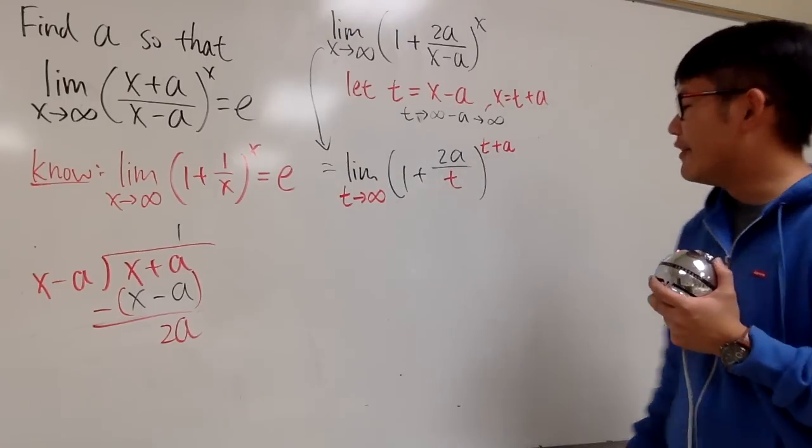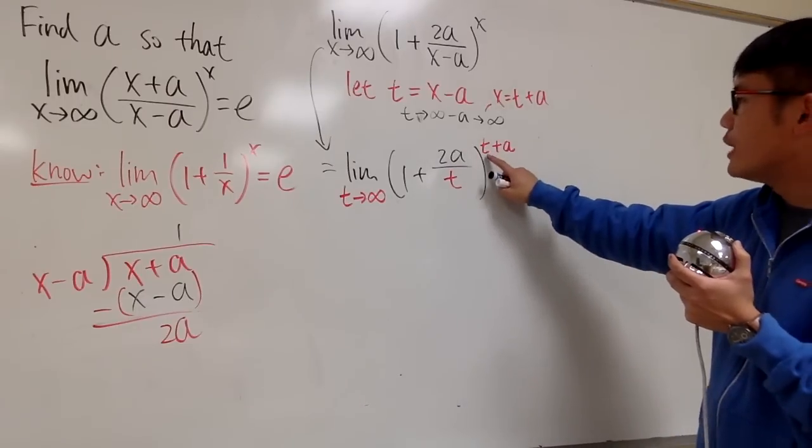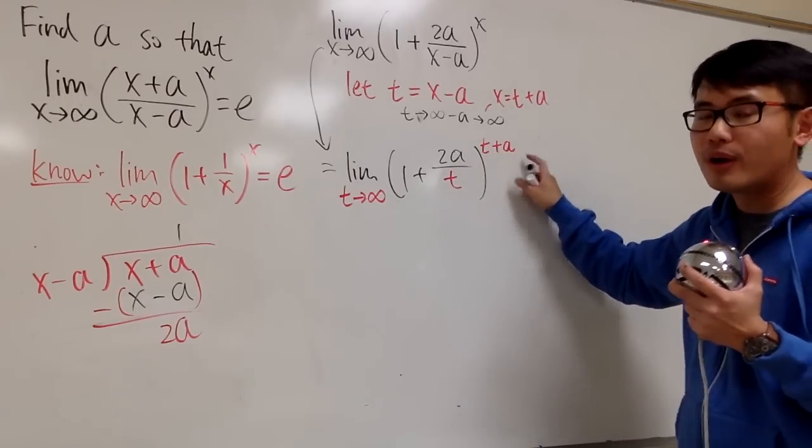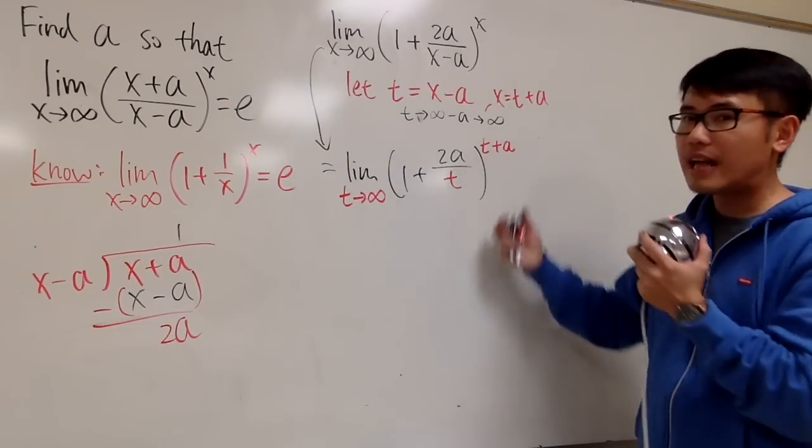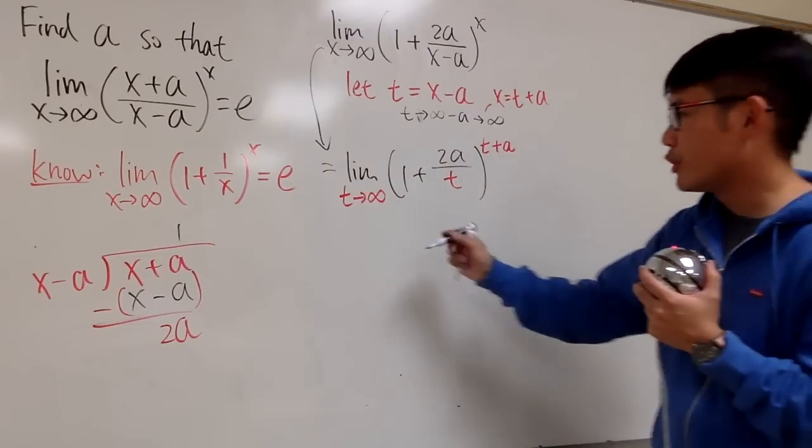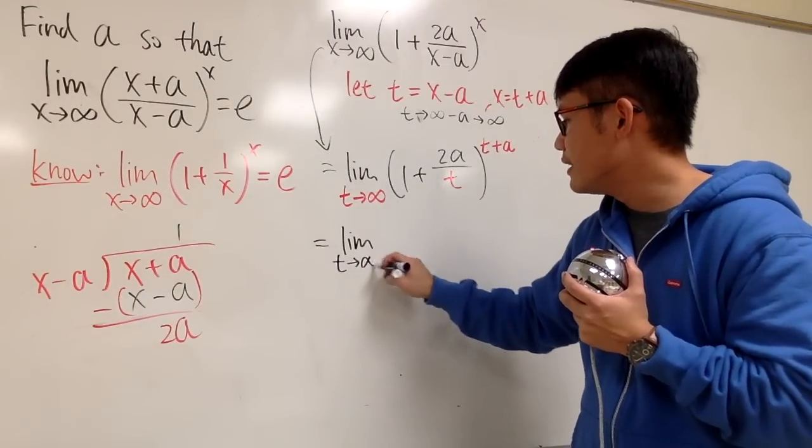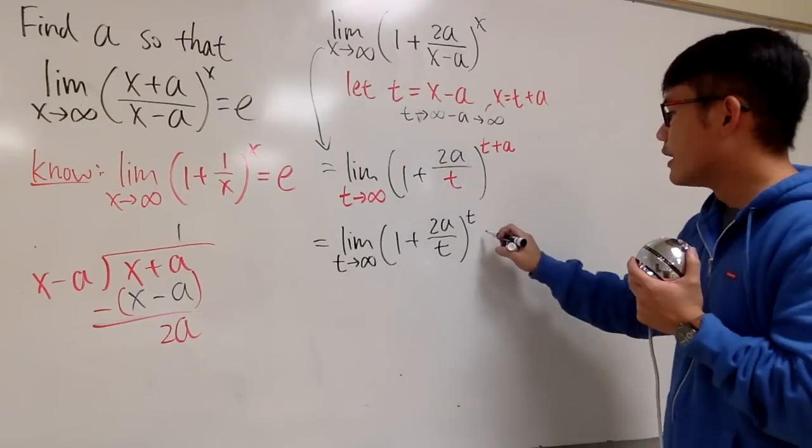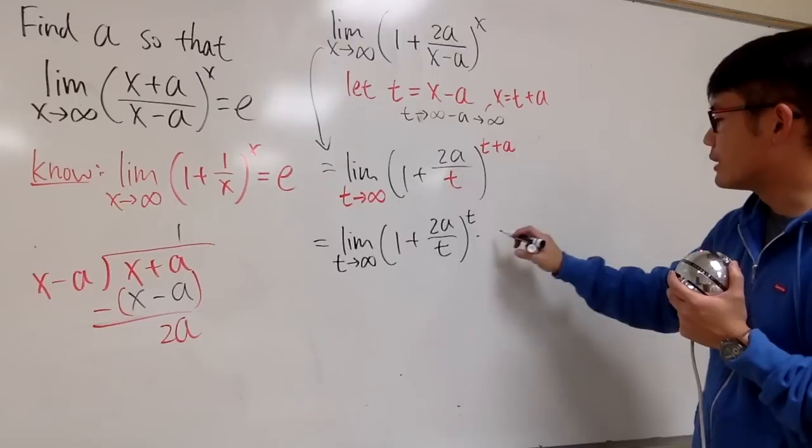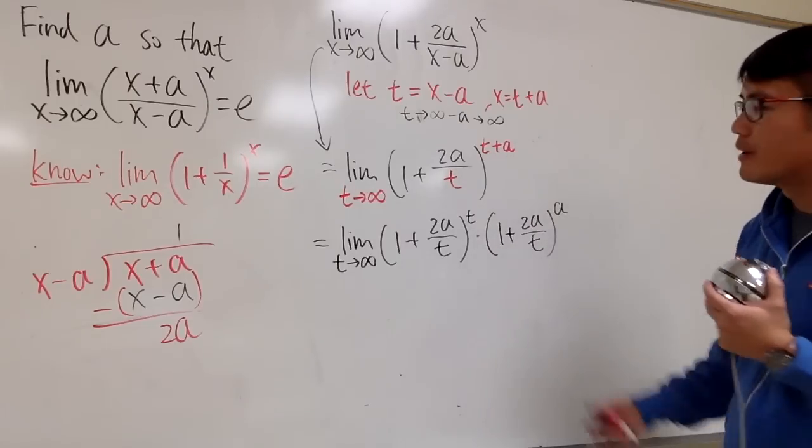And now, we can work with this much better. And the thing right here is that we have t plus a in the power. In fact, we can break this apart as this to the t power times this to the a power. And let me write this down for you guys. This right here is the limit as t goes to infinity now. The first part is 1 plus 2a over t to the t power times this to that power. So I have to write down the base again. 1 plus 2a over t raised to the a power.